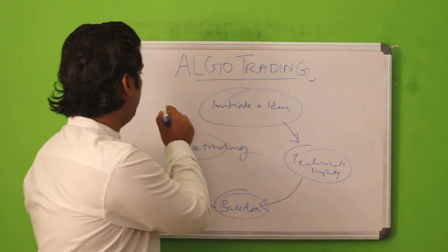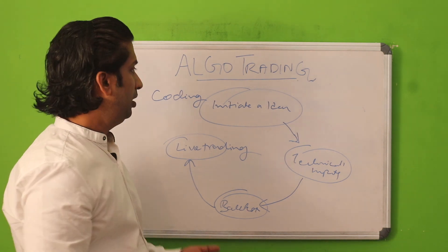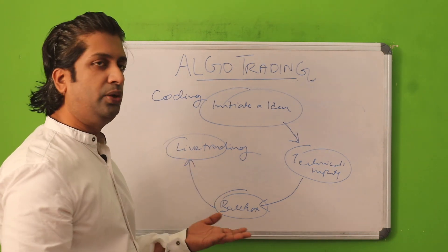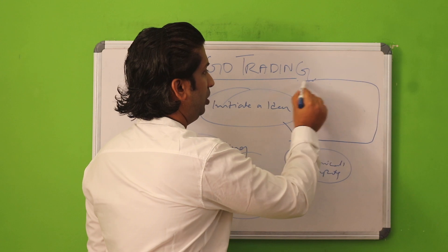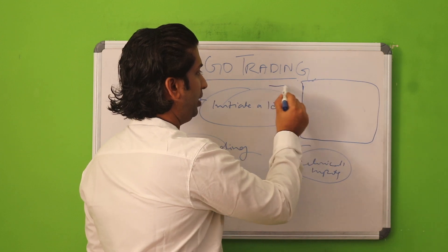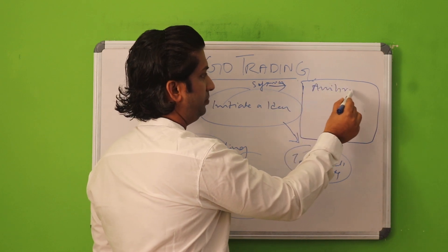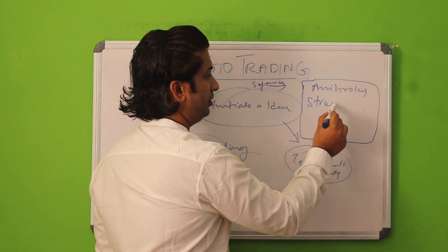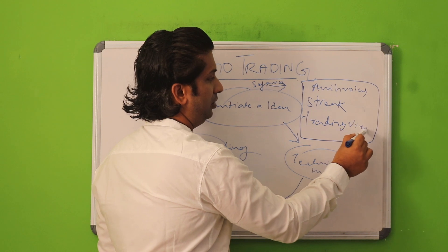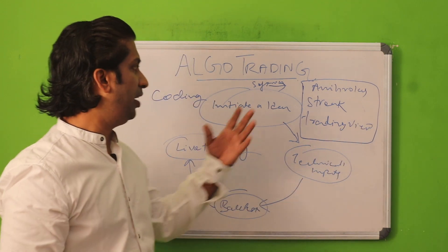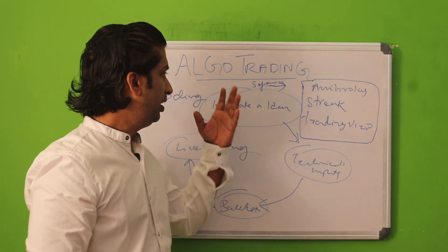Earlier, algo trading used to require coding — you had to learn programming. Now it's very simple; you don't have to learn any coding or programming. You can just make a strategy. Algo trading softwares are available — Amibroker is there, Streak is there, Tradingview is there. There are many algo trading software options you can use to depend on and execute orders.